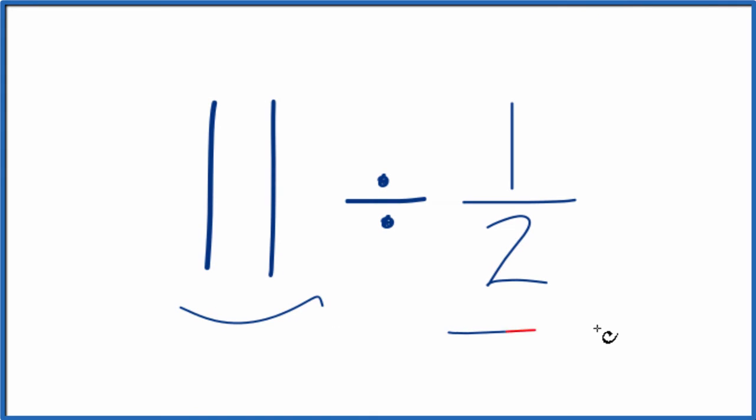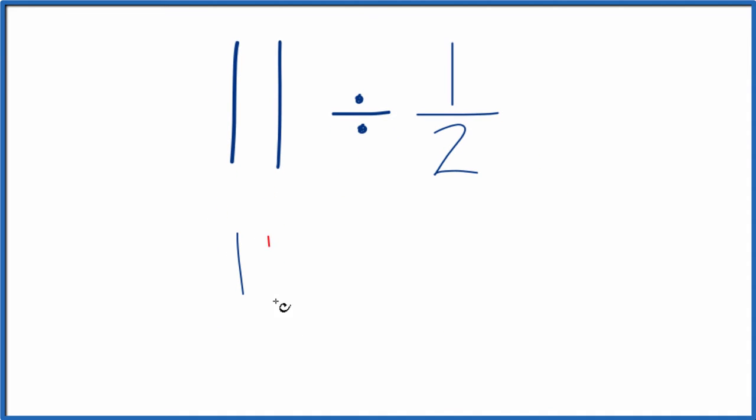Let's divide 11 by 1 half, and here's how we'll do it. We're going to call this 11 over 1. We're just dividing by 1, so it's still 11, but now we have a fraction, and that'll make this a lot easier.